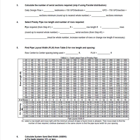Because we are using serial distribution, we're going to continue with step three. Our daily design flow is calculated using the number of bedrooms — six — and at 150 gallons per day per bedroom, that brings us to a total flow of 900 gallons per day. Since 750 gallons per day is the maximum flow allowed in a serial section, we divide 900 by 750, which gives us 1.2. After rounding up to the nearest whole number, we can see that we will need at least two sections in this design.